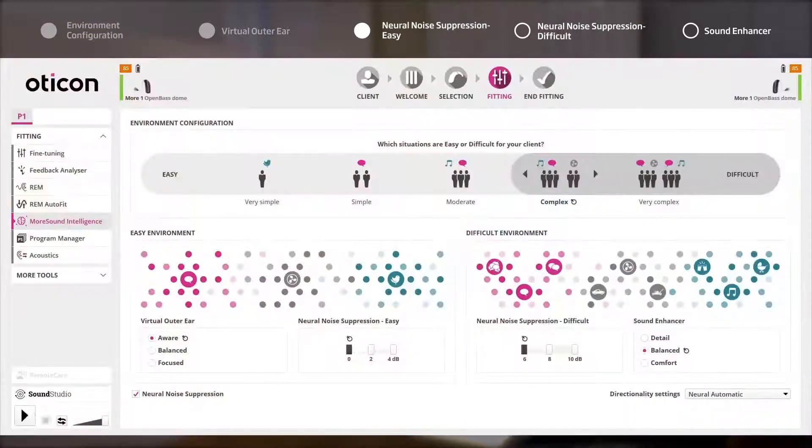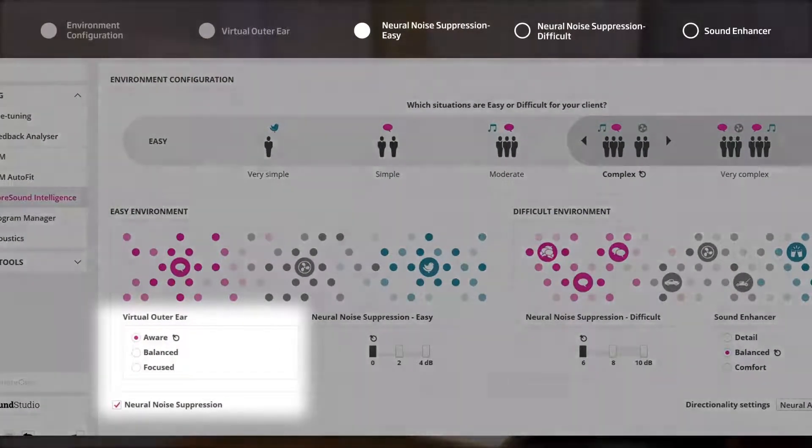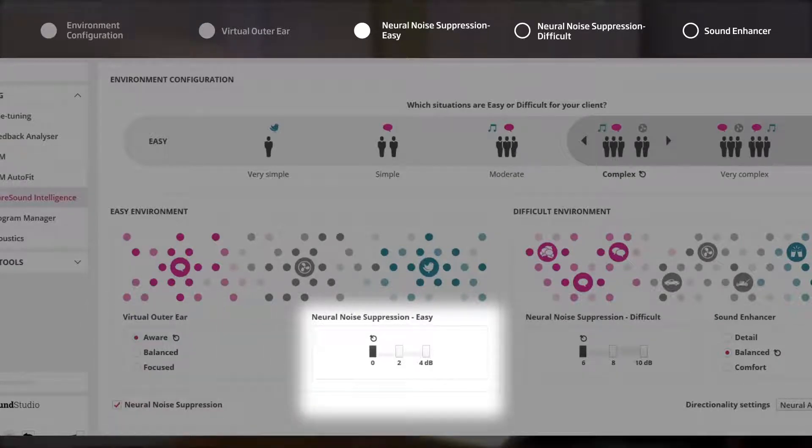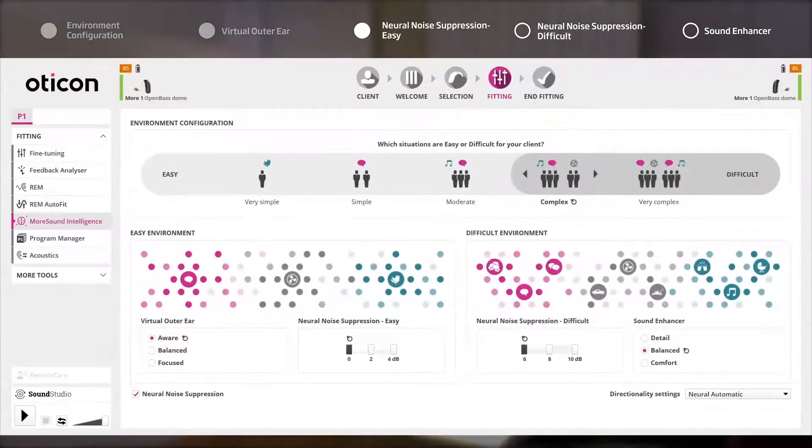If the listening situation is deemed easy, spatial cues are recreated by Virtual Outer Ear followed by Neural Noise Suppression. In this client's case, no noise suppression will be applied in easy situations.